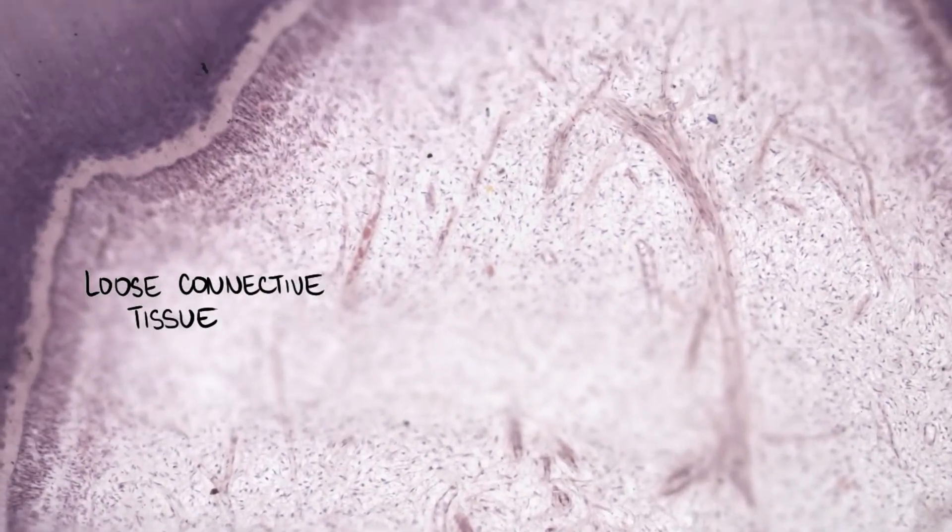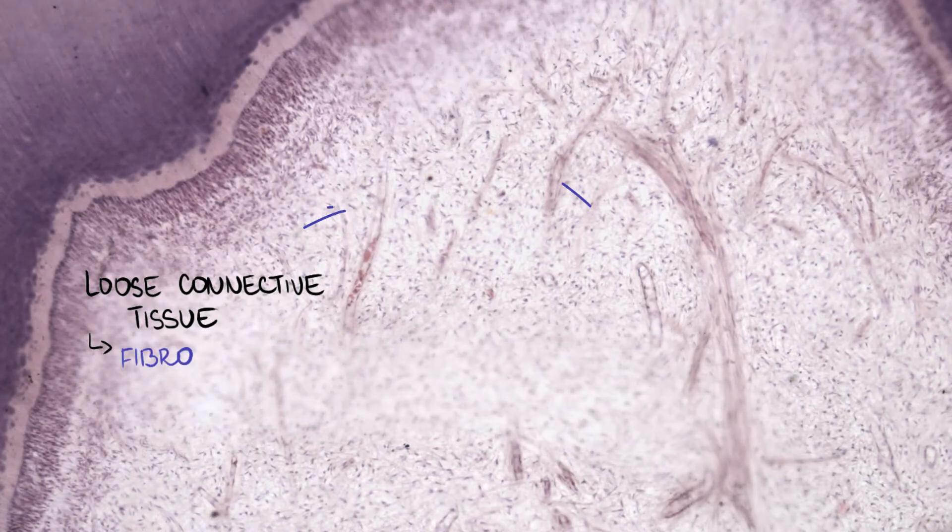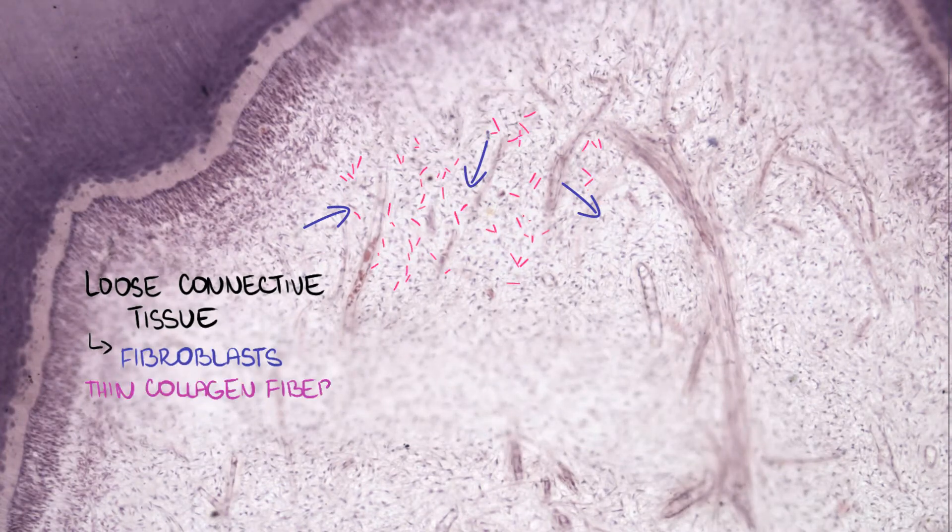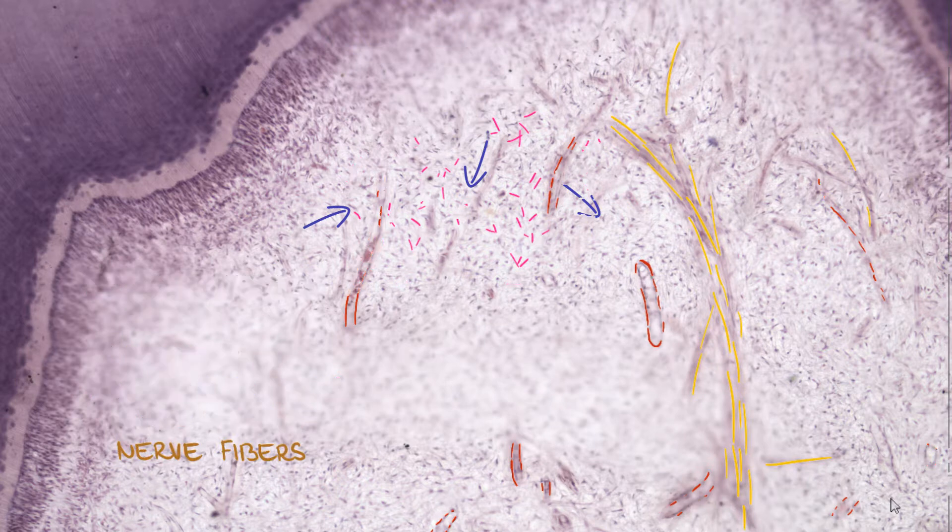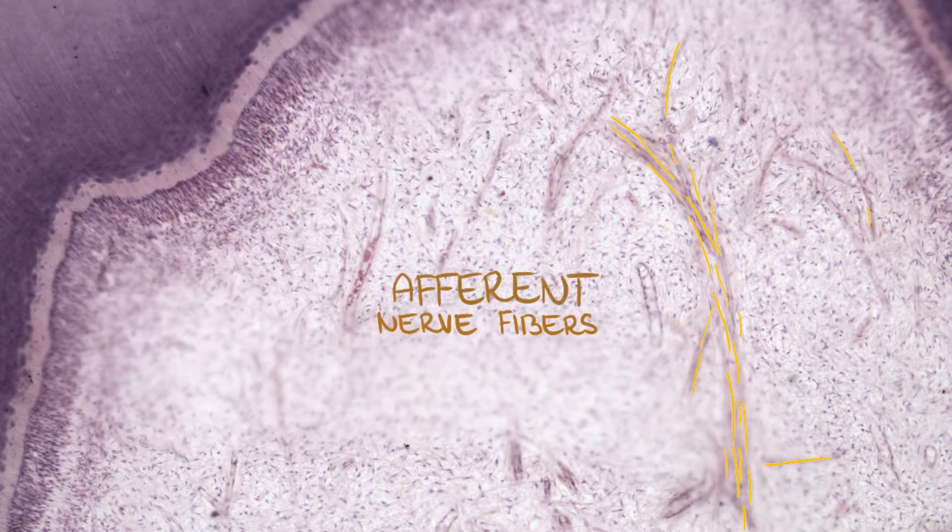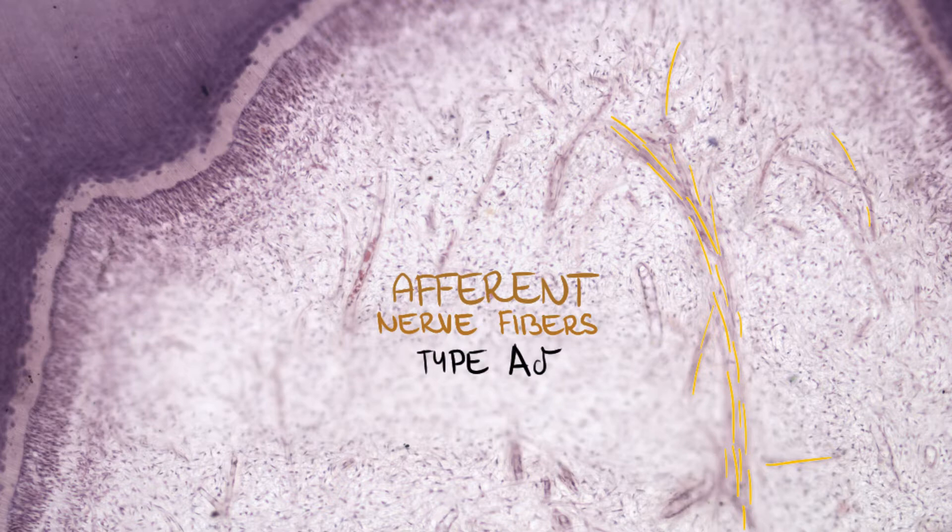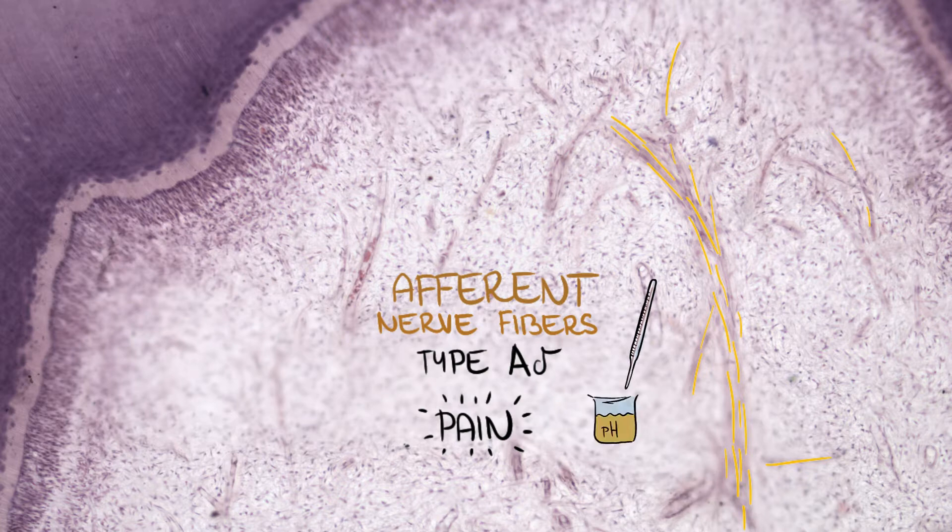It's filled with loose connective tissue containing numerous fibroblasts, thin collagen fibers, blood vessels, and nerve fibers. These fibers are afferent nerve endings type A delta, which conduct exclusively pain signals. Even a change in temperature or pH is perceived as pain.